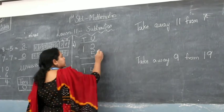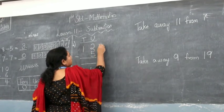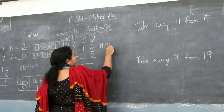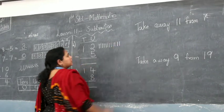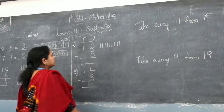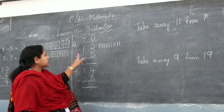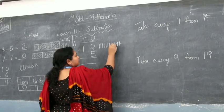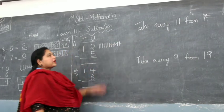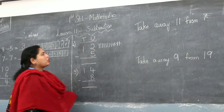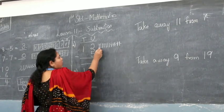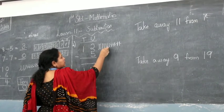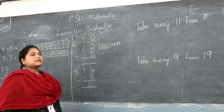What do you all do for 12 minus 5? I draw 12 lines: 1, 2, 3, 4, 5, 6, 7, 8, 9, 10, 11, 12. So I have 12 lines here. I have to take away 5: 1, 2, 3, 4, 5. I cancelled 5 lines. How many am I left with? 1, 2, 3, 4, 5, 6, 7. So I am left with 7.